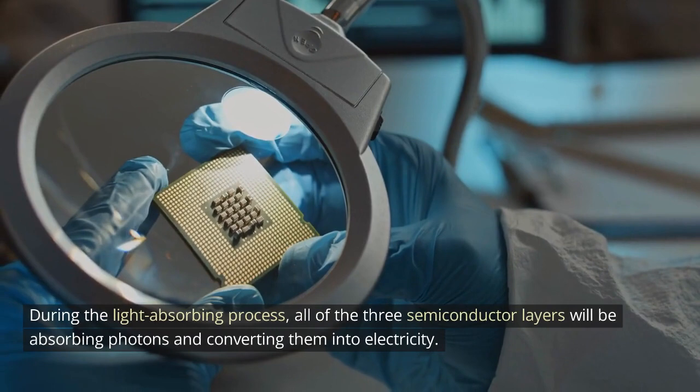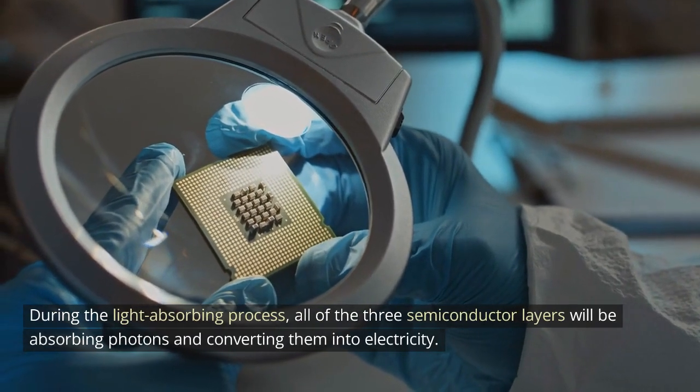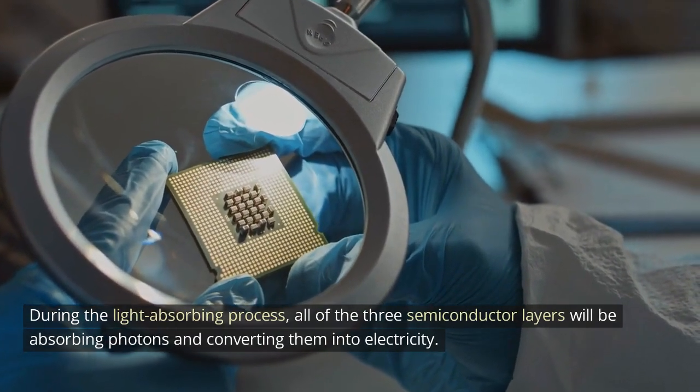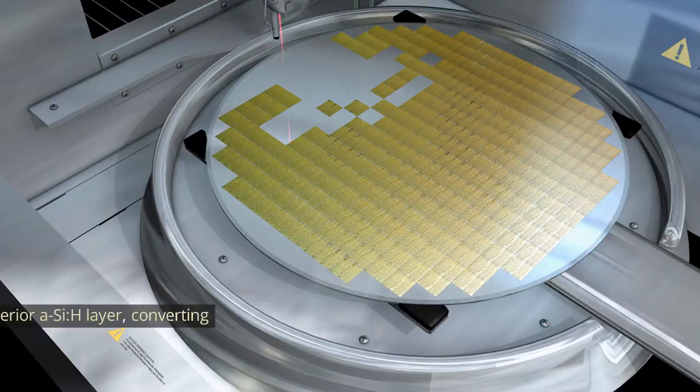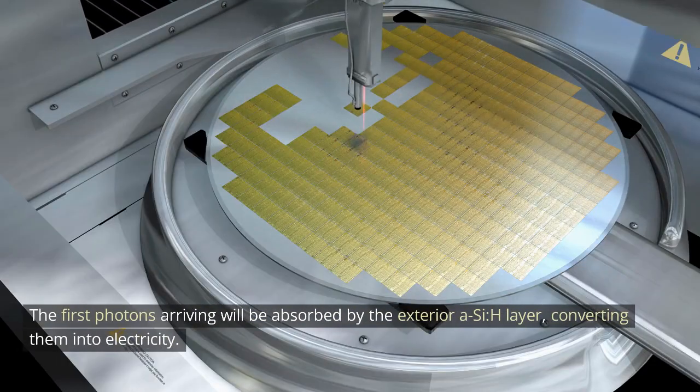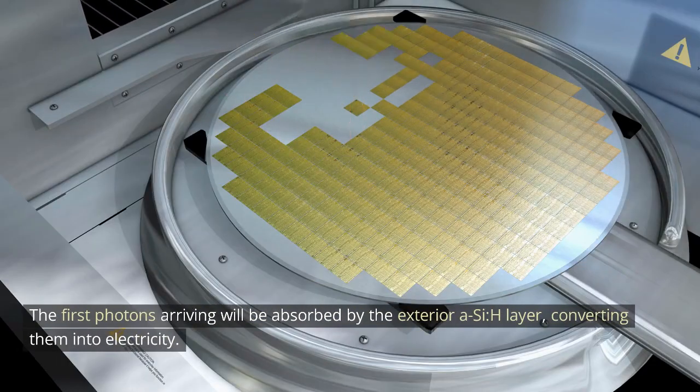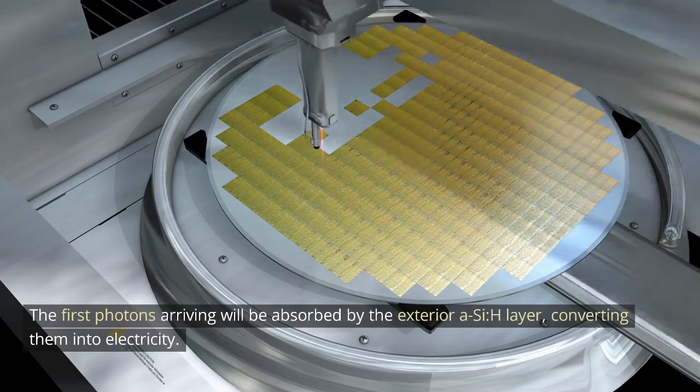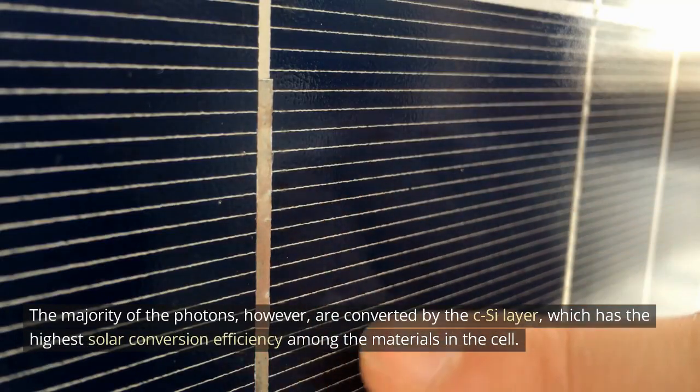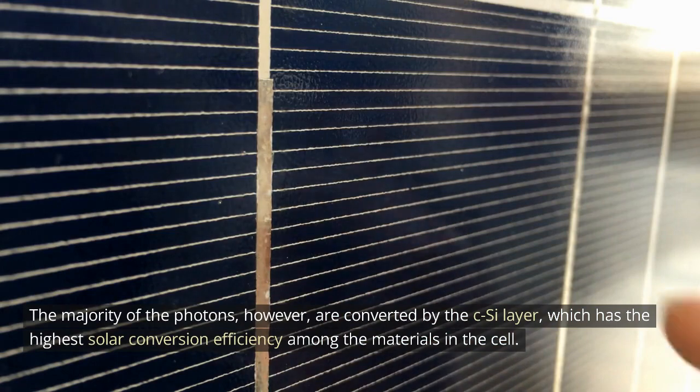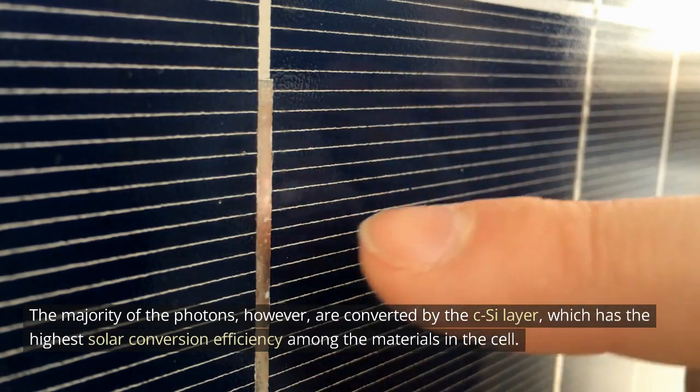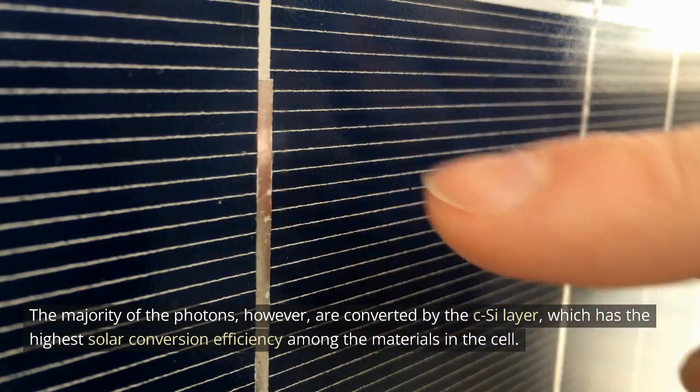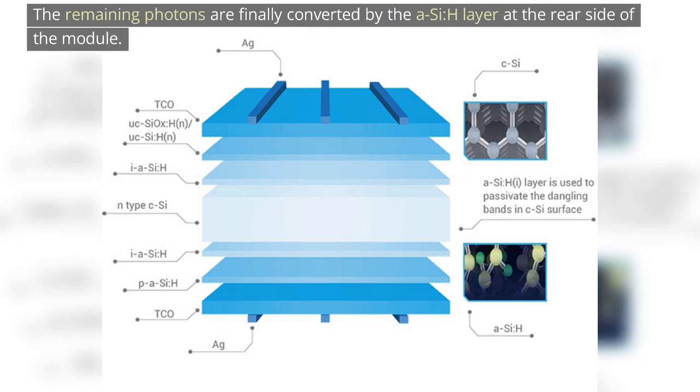During the light absorbing process, all three semiconductor layers will be absorbing photons and converting them into electricity. The first photons arriving will be absorbed by the exterior a-Si:H layer, converting them into electricity. The majority of the photons, however, are converted by the c-Si layer, which has the highest solar conversion efficiency among the materials in the cell. The remaining photons are finally converted by the a-Si:H layer at the rear side of the module.